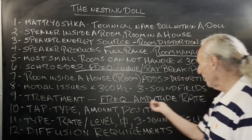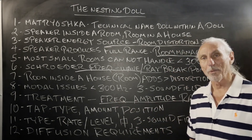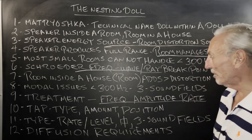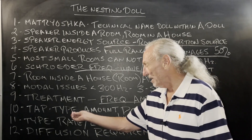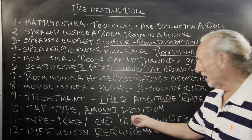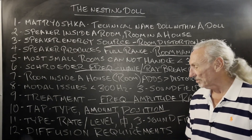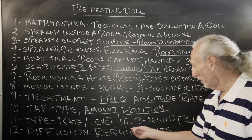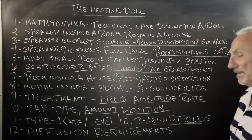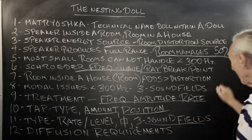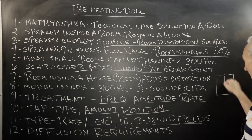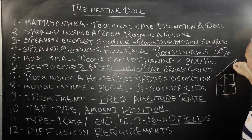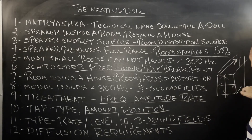Treatment, frequency, and amplitude. You've got to have the proper rate of absorption — that's very, very critical. And if you don't get enough of the right type, and you don't get enough amount, and you don't put it in the right place, you're not going to get the results you need. So the type has to have rate and level, square footage, and it's got to be in all three sound fields. Remember our sound fields are floor to ceiling, sidewall to sidewall, and front to rear in our rooms. So you've got three sound fields that you have to treat.